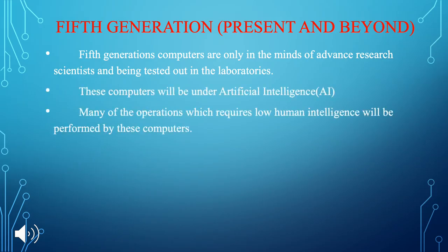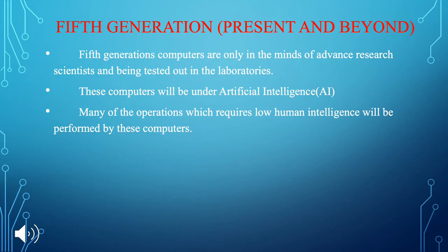The last generation is the fifth generation. Fifth generation computers are only in the minds of advanced research scientists and are being tested in laboratories. These computers will be under artificial intelligence, and many operations which require low human intelligence will be performed by them. Parallel processing is emerging, showing the possibility that the power of many CPUs can be used side by side, making computers more powerful than those under central processing. Advances in superconductor technology will greatly improve the speed of information transfer, and may change many of the devices in computers that we use today.